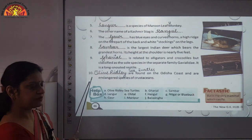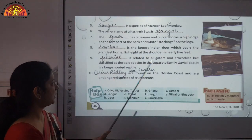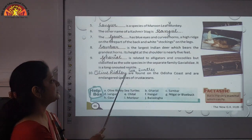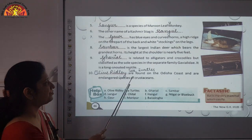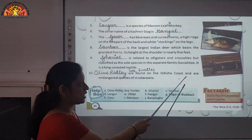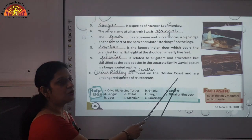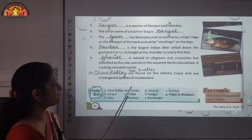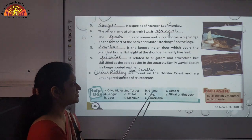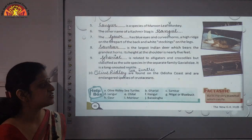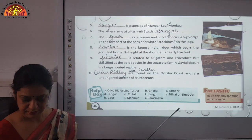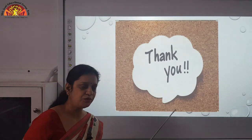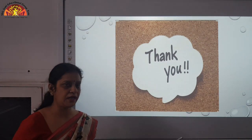Number ten: Olive Ridley Sea Turtles are found on the Odisha coast and are an endangered species of crustaceans. Now fill in the answers very carefully, with neat and clean handwriting. Thank you.